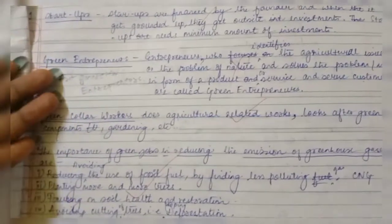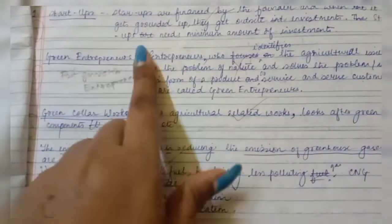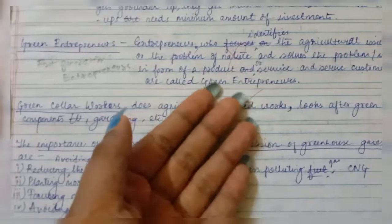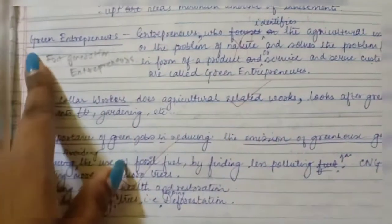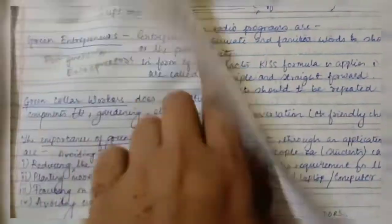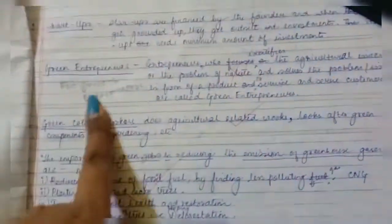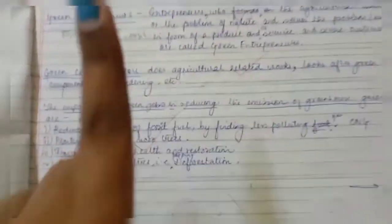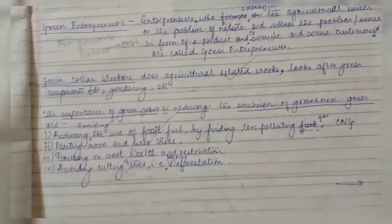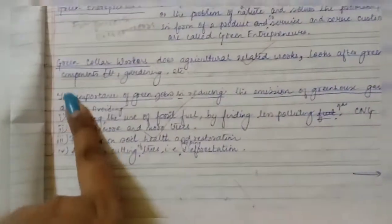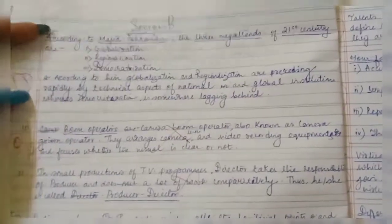When it came to green entrepreneurs, I went wrong — I just wrote the definition of entrepreneurs. But the definition of green entrepreneurs was actually about first generation entrepreneurs, not regular entrepreneurs. I don't think CBSE will ask this question, but you never know. All the other questions were straightforward, but green entrepreneurs was not.